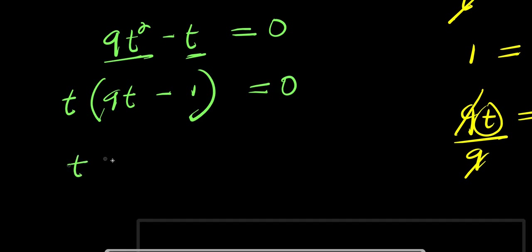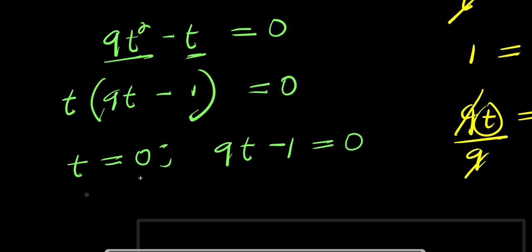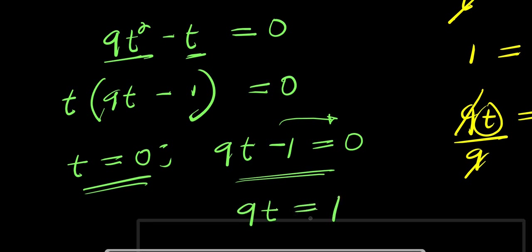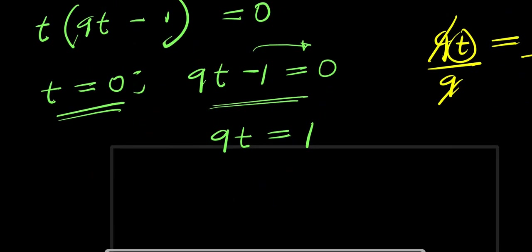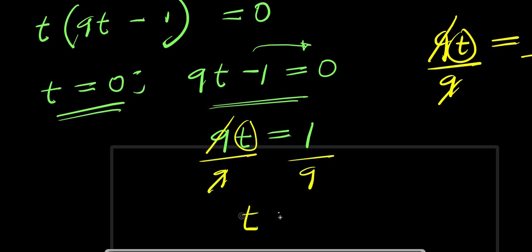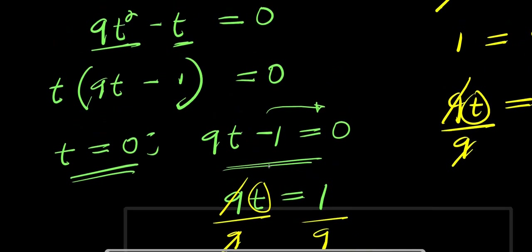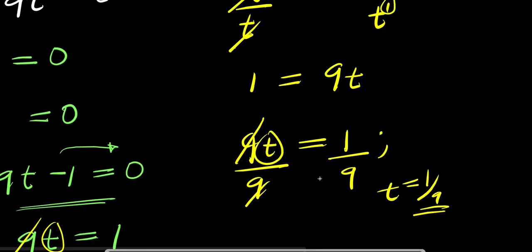From t times (9t minus 1) equals zero, I can have t equals 0, or 9t minus 1 equals zero. Solving the linear equation: 9t equals 1, dividing both sides by 9 gives t equals 1 over 9. So we have two values for t: zero and one over nine using this quadratic method, while the division method gave only t equals one over nine.